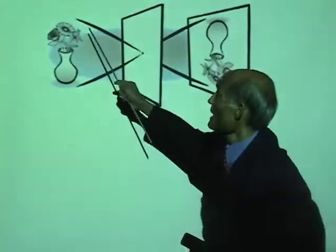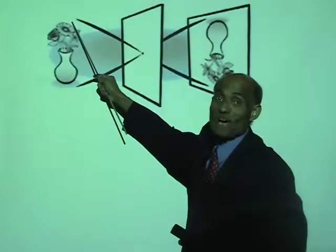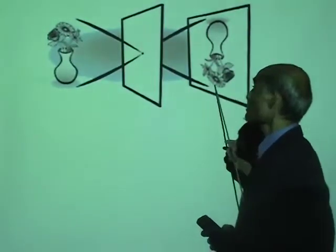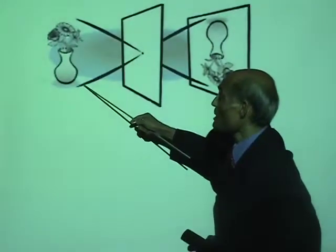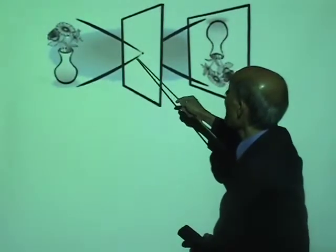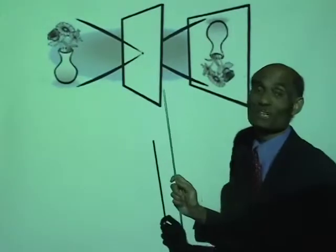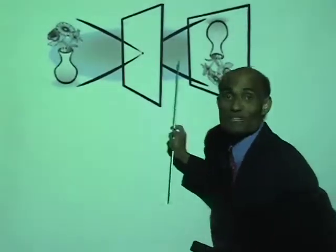What is the meaning of rectilinear propagation of light? Light travels in a straight line. A ray of light starting from the top of the flower goes through the hole and falls at the bottom of the screen. A ray of light starting from the bottom of the flower, after going through the hole, falls at the top of the screen. So you see an image of this object, which will be upside down.